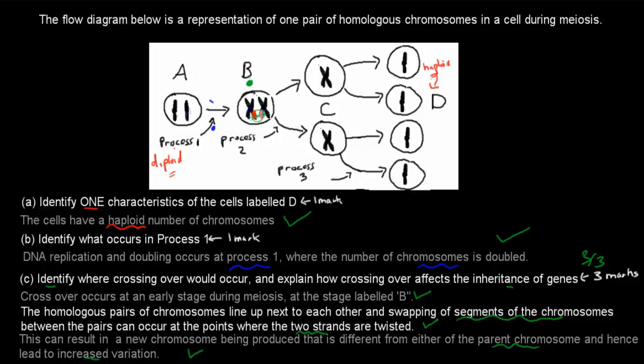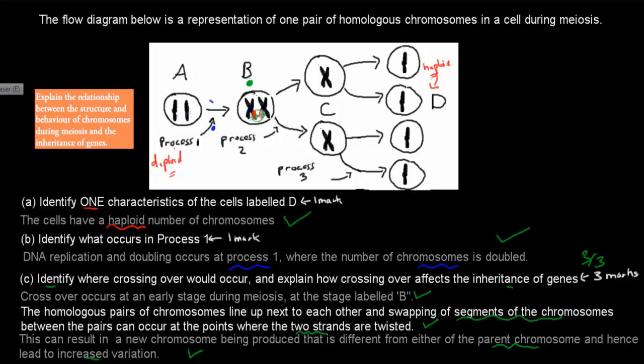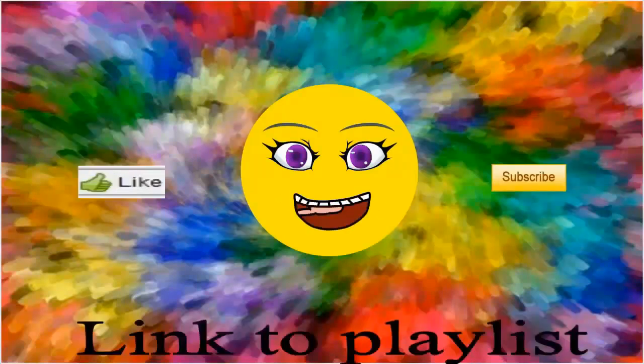And where did that question come from? It came from this point: Explain the relationship between the structure and behavior of chromosomes to meiosis and the inheritance of genes. That's more or less this question. I hope that was useful. Thank you for watching.